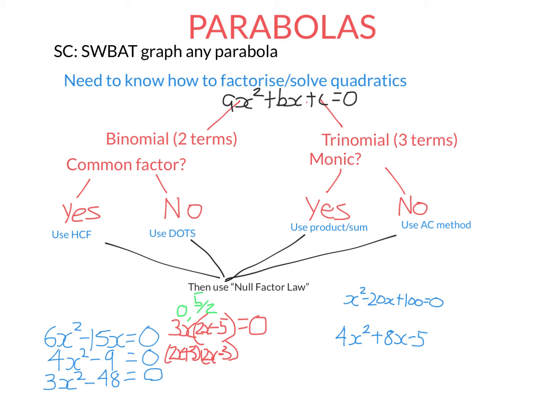One bracket gets a plus and one gets a minus. We've written it as something times something, so we can use the null factor law. If 2x plus 3 equals zero, x is negative 3 on 2. If the second bracket equals zero, x is positive 3 on 2. The two solutions are positive 3 on 2 and negative 3 on 2.